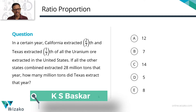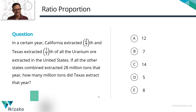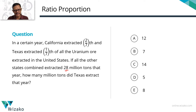In a certain year, California extracted two sevenths and Texas extracted one seventh of all the uranium ore extracted in the United States. If all the other states combined extracted 28 million tons that year, how many million tons did Texas extract?